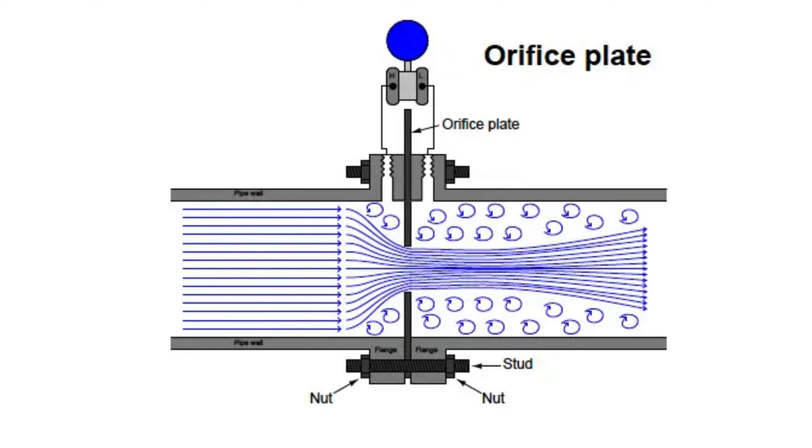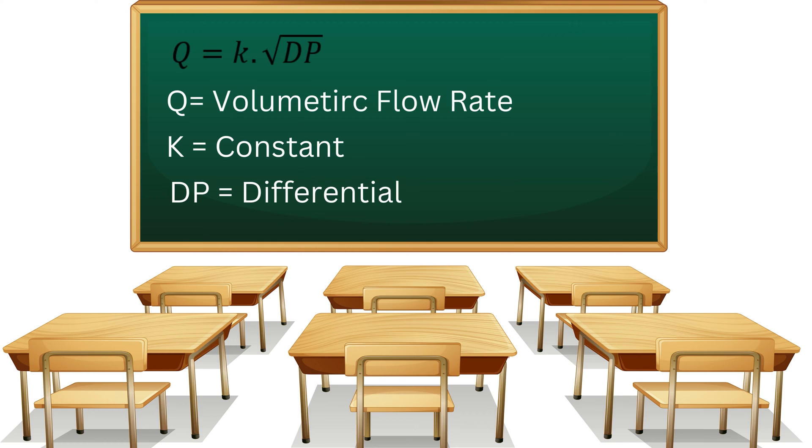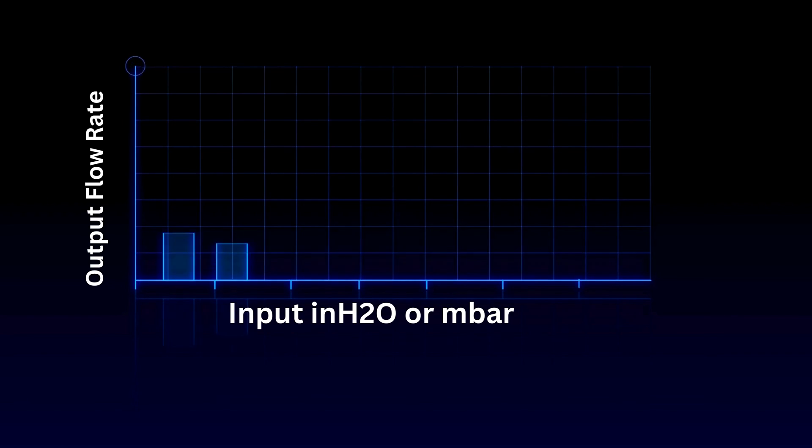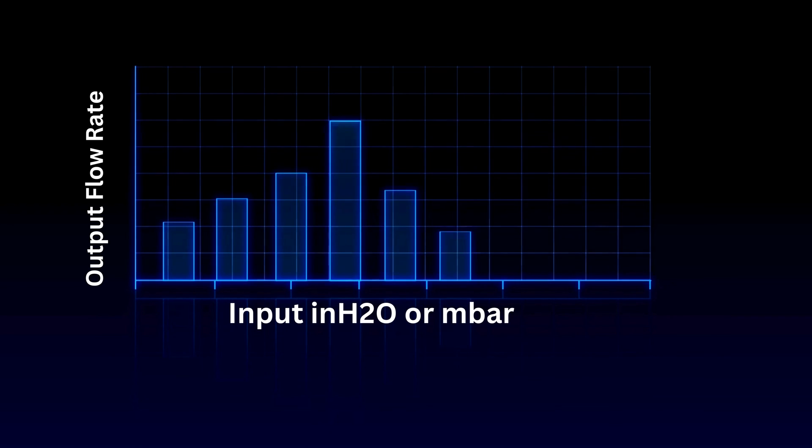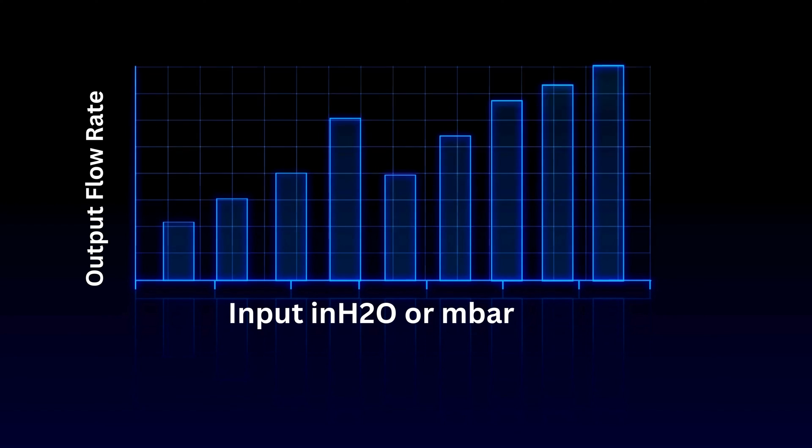Relationship between flow rate and differential pressure: Q equals K multiplied by the square root of DP, where Q is the volumetric flow rate, K is a constant, DP is the differential pressure, and the square root function represents the relationship between velocity and pressure. From this equation, we can see that an increase in differential pressure will result in an increase in flow rate. However, the relationship between flow rate and differential pressure is not linear but square rooted.